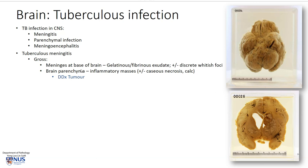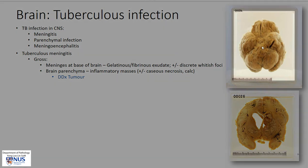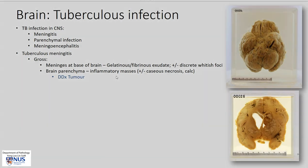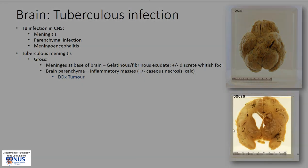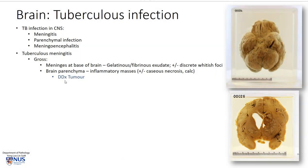Grossly, the meninges at the base of the brain can have these gelatinous or fibrinous exudates that we saw earlier, with or without some discrete whitish foci, which we also saw. And the brain parenchyma can have these inflammatory masses, as you can see here, which on imaging in the real-life patient may sometimes be mistaken for tumor. So that is a viable differential diagnosis.